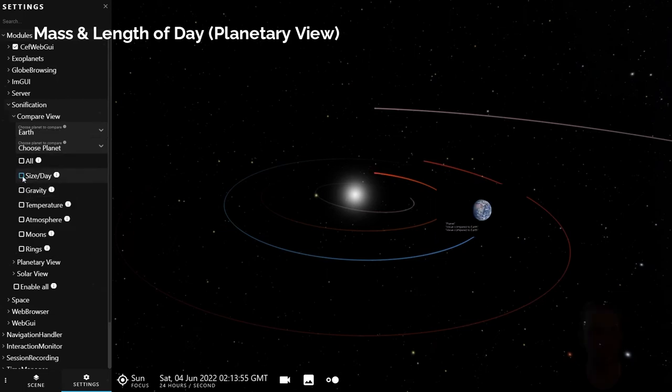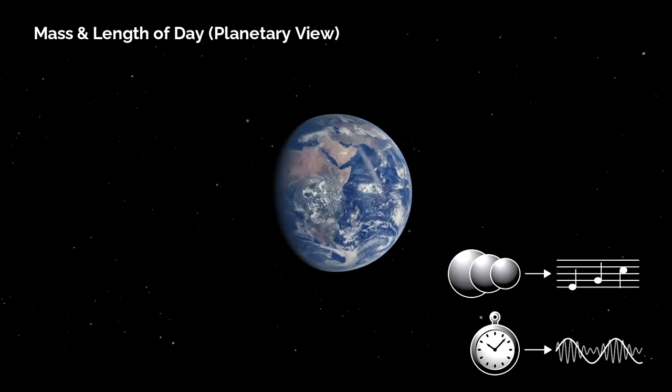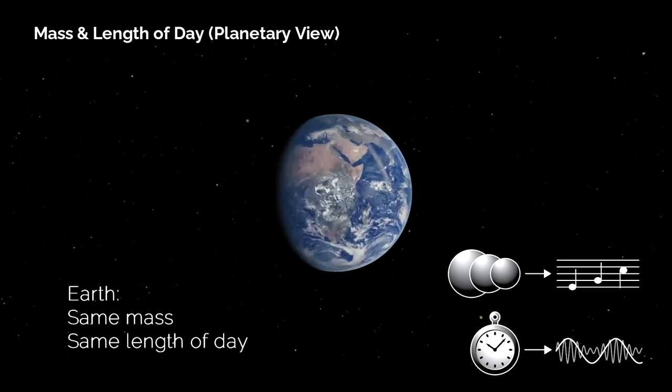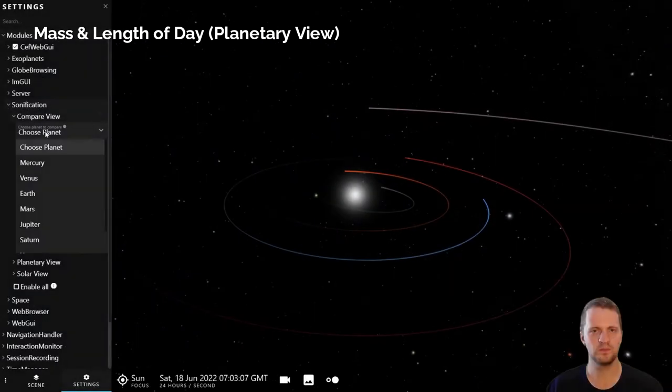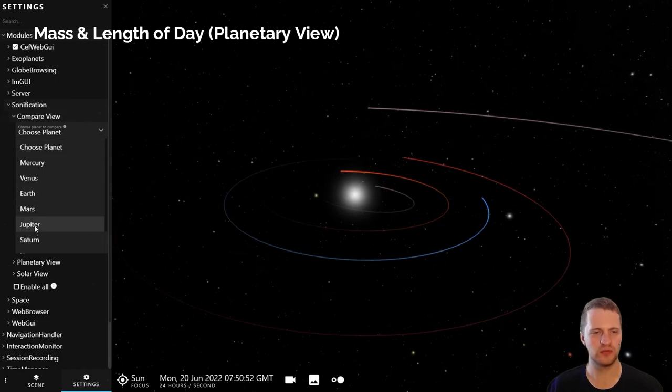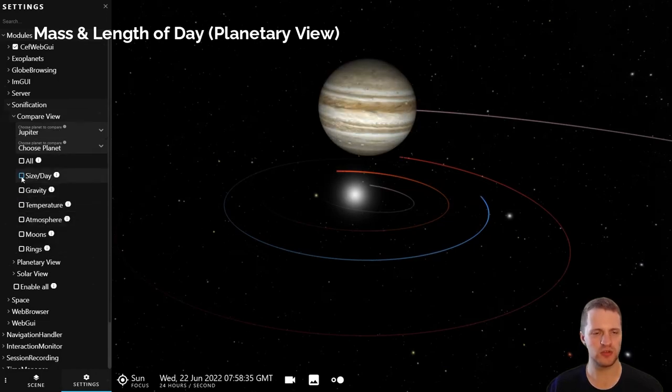So we'll start with Earth. And next is Jupiter, which has both the largest mass and the shortest length of day of the planets.